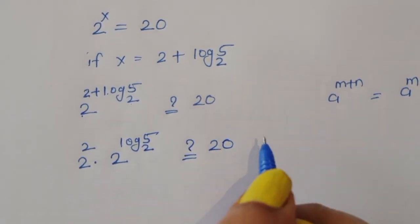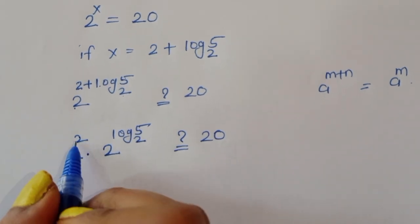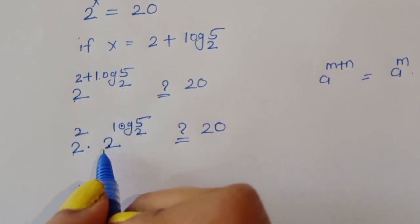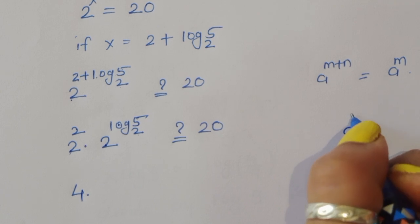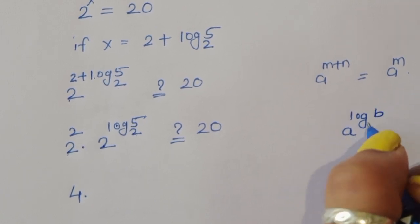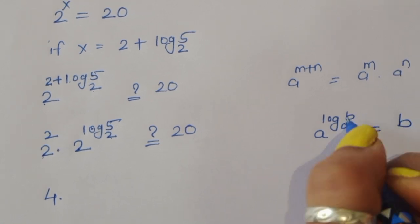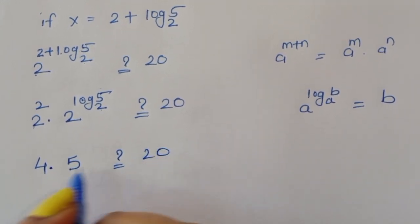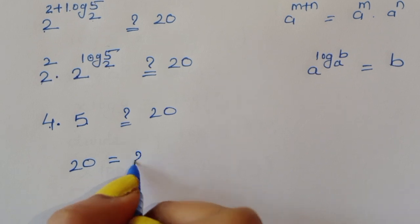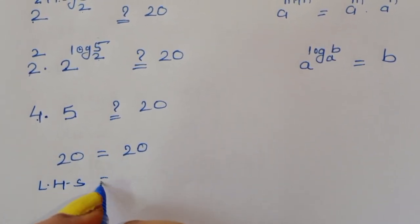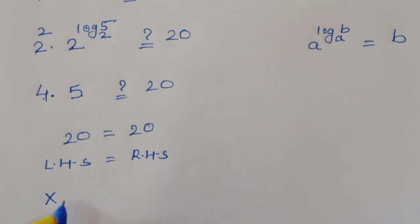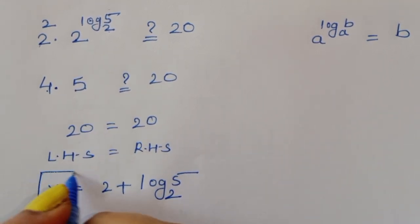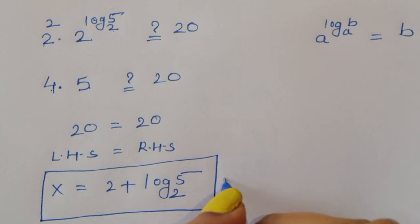Now 2 power 2 is 4, and 2 power (log₂ 5) equals 5. So we get 4 times 5 which is equal to 20. This confirms our answer is correct. The solution is x equals 2 plus log 5 to the base 2. Thank you.